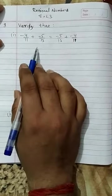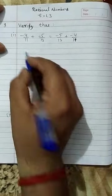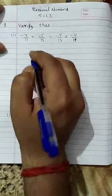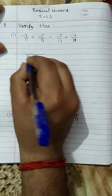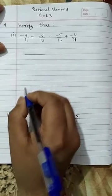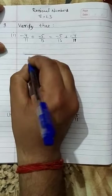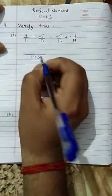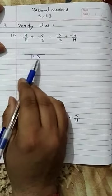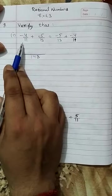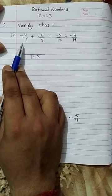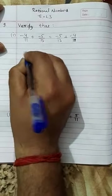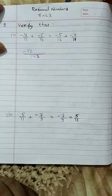We have to verify that left hand side is equal to right hand side. For that we have to find the LCM of 11 and 13 first. The LCM of 11 and 13 is 143. 143 divided by 11 is 13, and 13 fours are 52, so we will write here minus 52.